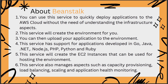Elastic Beanstalk has support for applications developed in Golang, Java, .NET Frameworks, Node.js — which is the application we're demoing today — PHP, Python, and Ruby. This service will create EC2 instances for hosting the environment and will also manage aspects such as capacity provisioning, load balancing, scaling, and application health monitoring.